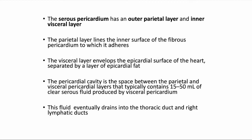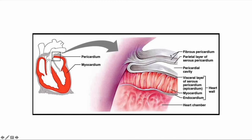Usually, the pericardial cavity houses about 15 to 50 ml of fluid, which can be physiological. In this diagram, we can clearly see the different layers of the pericardium. The outermost layer is the fibrous pericardium, attached to the chest wall. Deeper to that is the serous pericardium with two layers: the parietal layer closely adhered to the fibrous pericardium, and the visceral layer lining the epicardial surface. The pericardial cavity is the space between these two serous layers where fluid is collected.